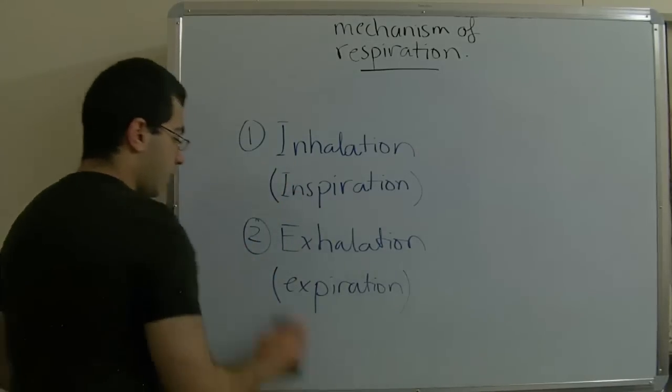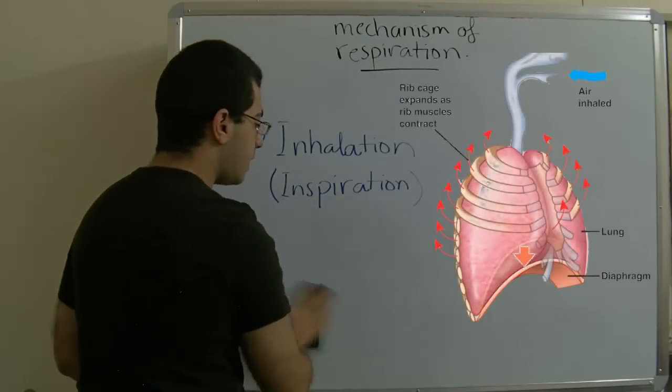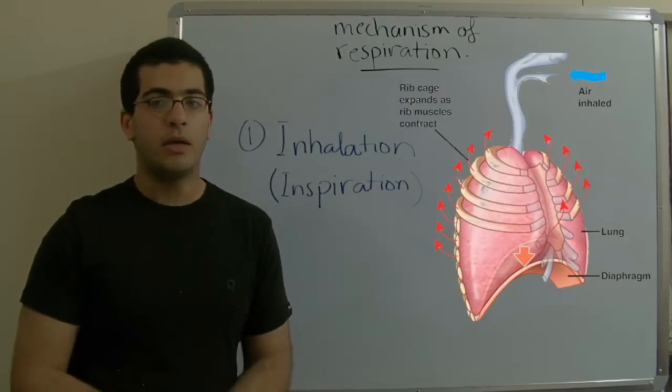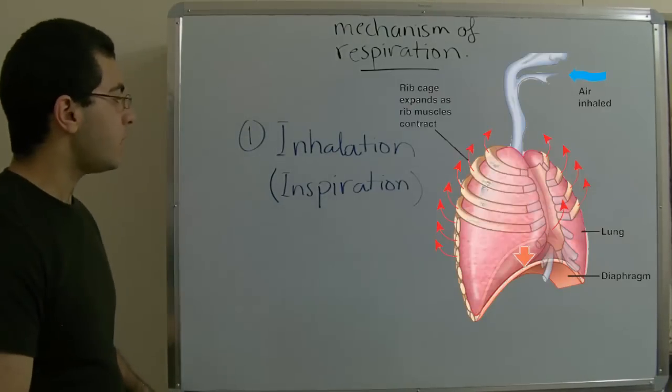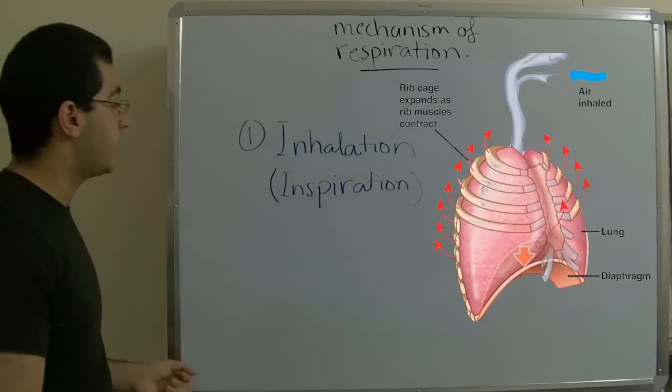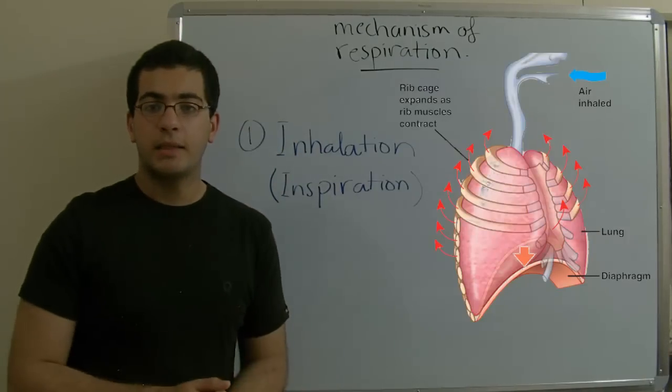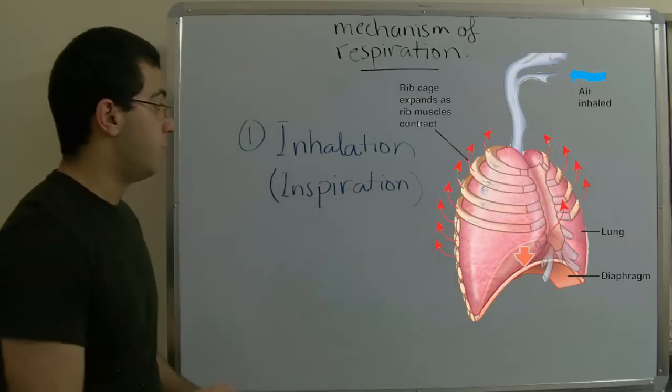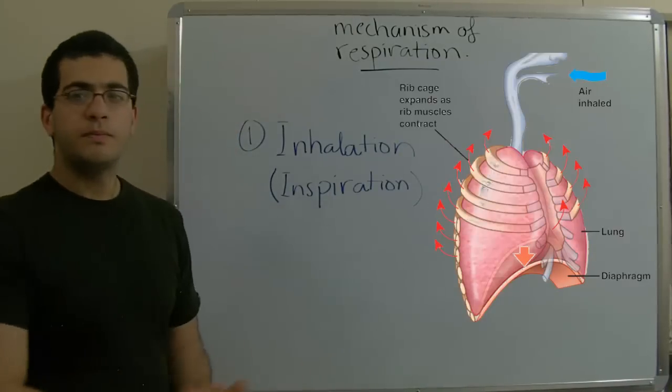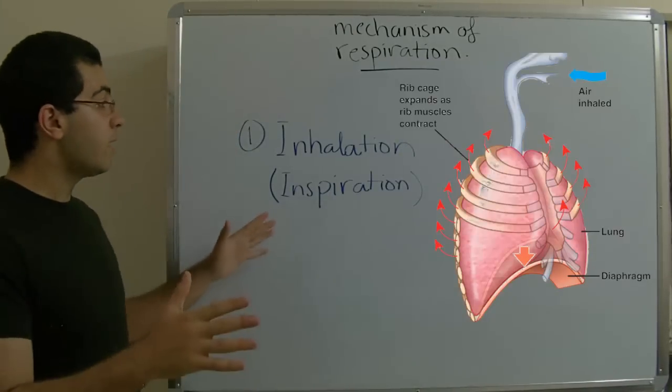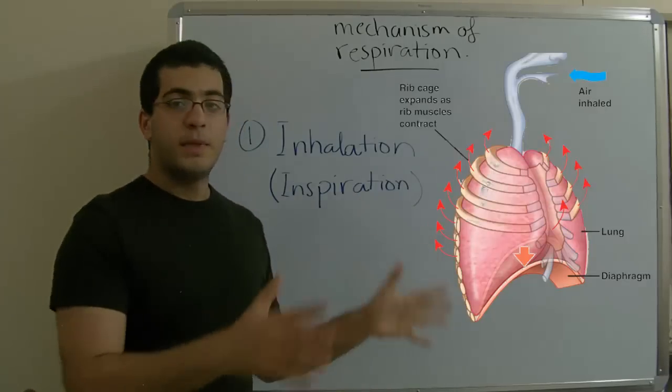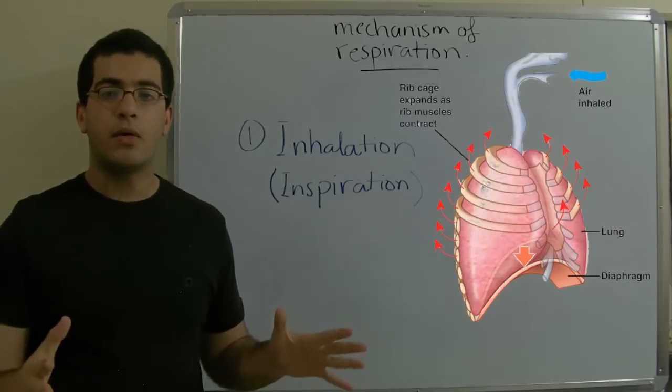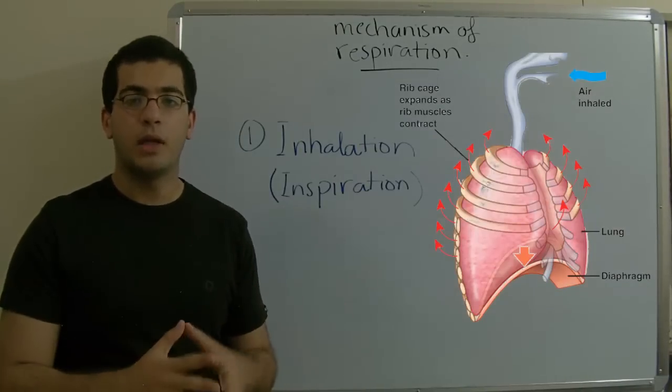First, inhalation. The muscles which surround the ribs inside or around the respiratory system contract. This shifts the ribs upwards as we can see in this image. And so the area of this rib cage increases, and so the area or the volume of the lungs increases.